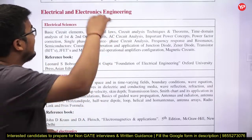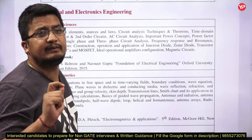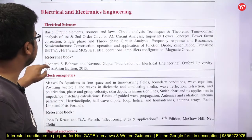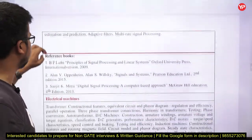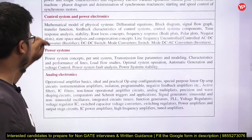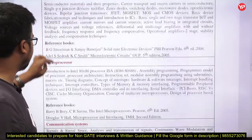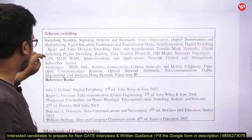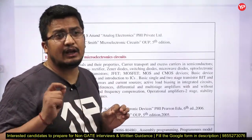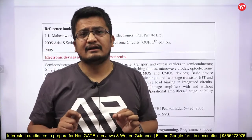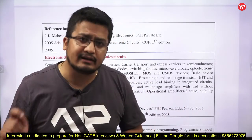In electrical and electronics engineering, the syllabus for Test 2 — from which you will get 70 questions — covers: electrical sciences, electromagnetics, digital electronics, signals and systems and digital signal processing, electrical machines, control systems, power systems, power electronics, analog electronics, electronic devices and microelectronics circuits, microprocessors, communication systems, and telecom switching. There are around 12 to 13 subjects in total.